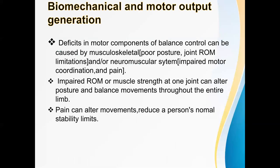Then we come to biomechanical and motor output generation. If there is any deficit in motor components of balance control — such as joint range of motion limitation, poor posture, or impaired motor coordination — these will lead to balance impairments. Impaired range of motion or muscle strength at one joint will also alter the posture and balance movements throughout the entire limb. In individuals with neurological conditions like stroke, TBI, or Parkinson's disease, there is abnormal tone or impaired coordination of motor strategies, leading to failure to generate adequate muscle forces required for balance.